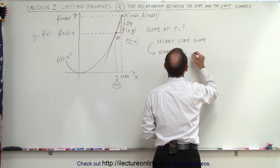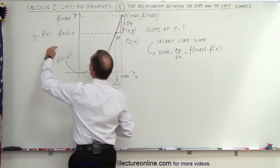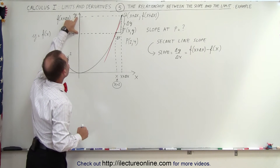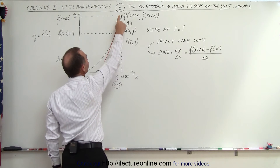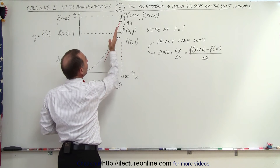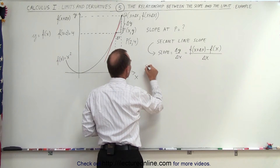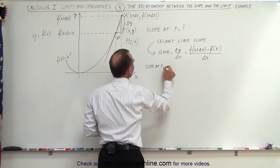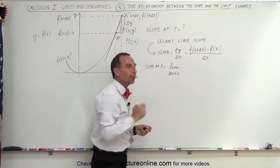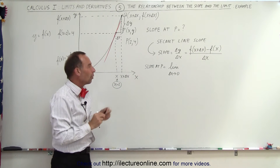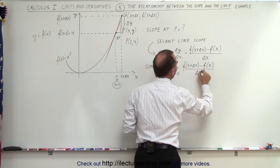Delta y can be expressed as the function evaluated at x plus delta x minus the function evaluated at x, all divided by delta x — that gives us the slope of the secant line. But we're interested in the slope of the tangent line at P. So the slope at P is equal to the limit as delta x approaches 0 of f of x plus delta x minus f of x, divided by delta x. That's what we saw in the previous video.